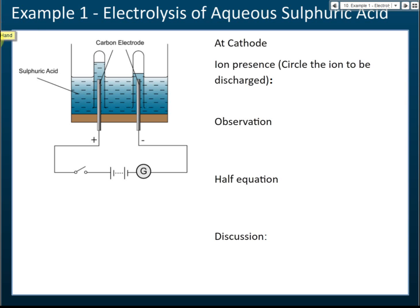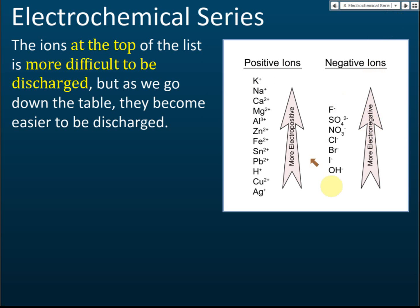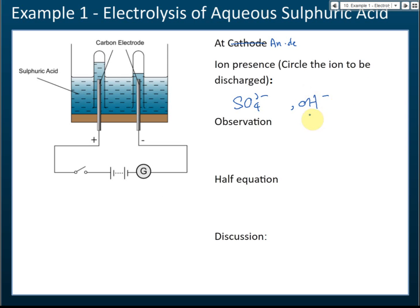Now at the anode: the ions present are sulfate and hydroxide ions. Which one will be selected to be discharged? Looking at the electrochemical series, hydroxide is lower in the series than sulfate, and therefore hydroxide will be selected to be discharged. We circle hydroxide as the ion to be discharged.